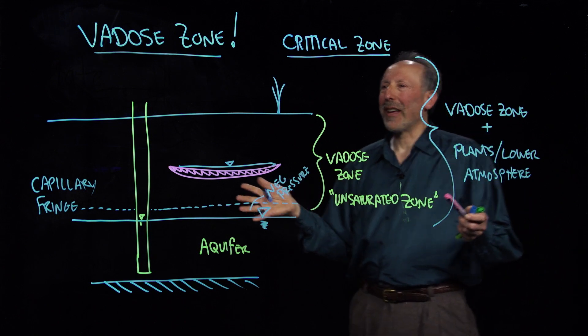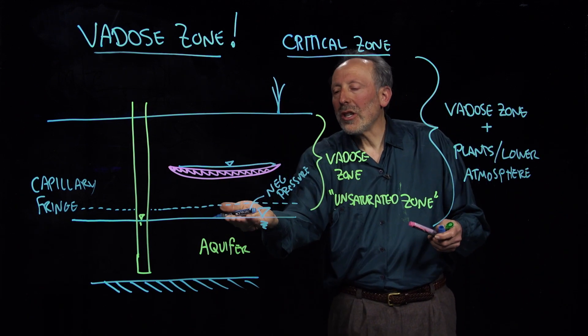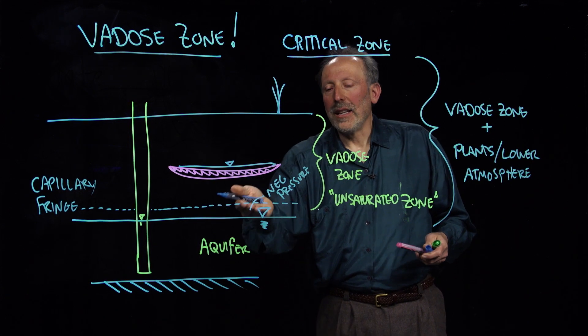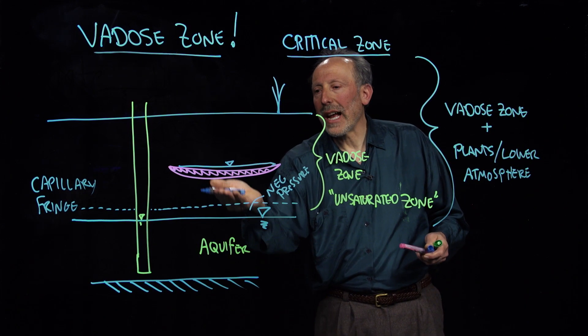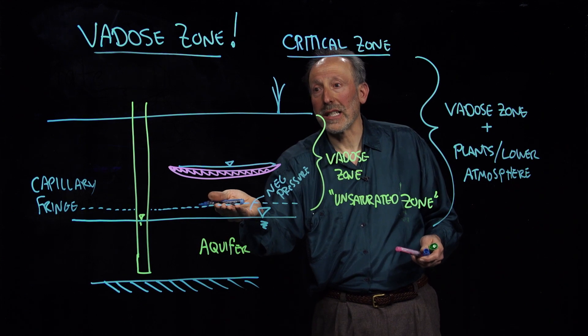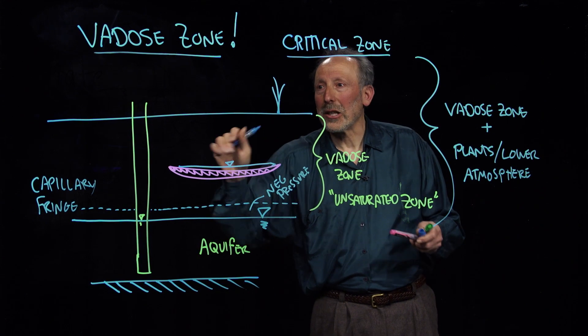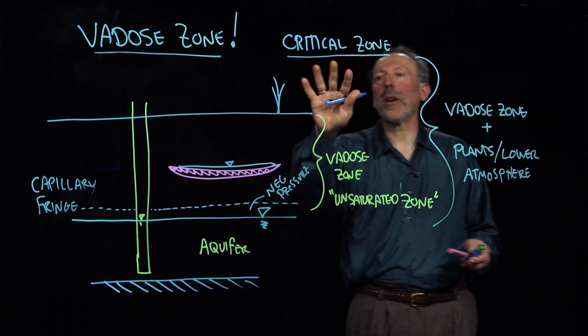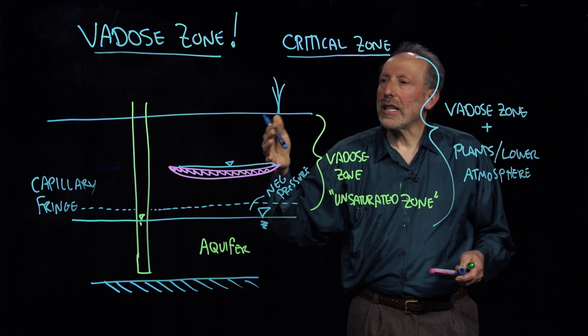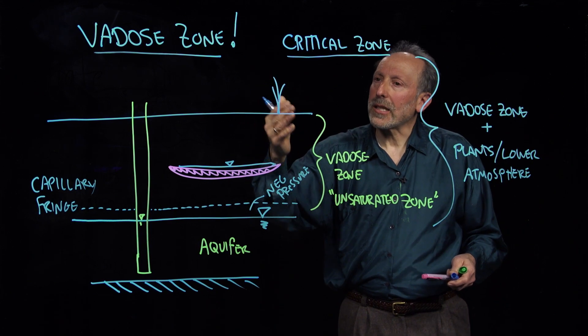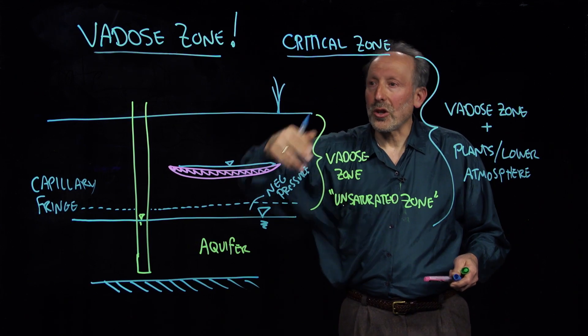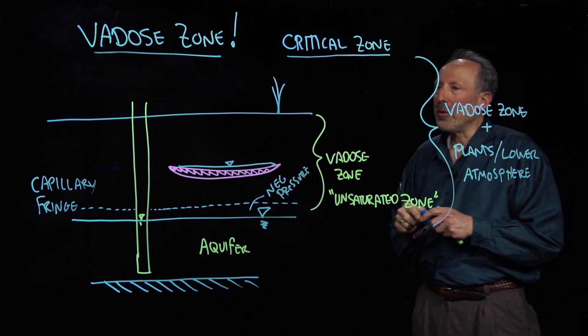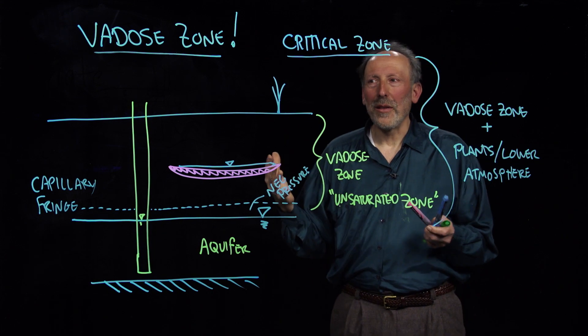So what is the Vadose Zone? The Vadose Zone is this region of the world above the water table. And it can have some areas that are saturated locally, here and here. So this is saturated because it's the capillary fringe. This is saturated because it's a little perched aquifer. But more or less it's the unsaturated zone or Vadose Zone. Whereas the critical zone also tries to incorporate the effects of plants, plant roots, and the biological and atmospheric processes. So those are some terms that people are using these days to describe the part of the world that we're thinking about.